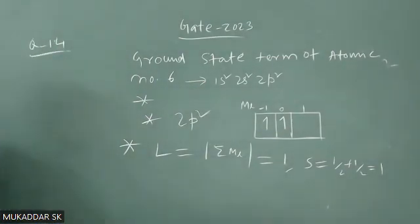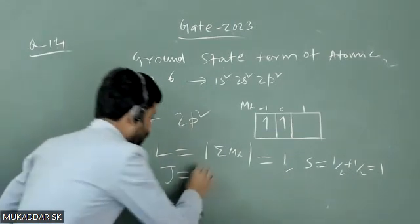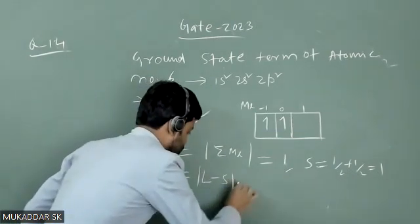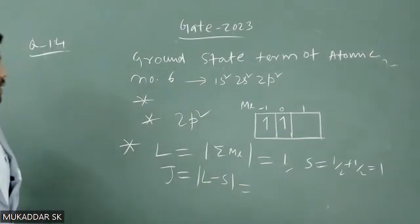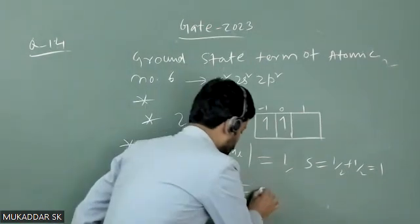To find out that ground state - less than half filled - J will be how much? It will be modulus of L minus S because less than half filled J for 2p², L minus S that will give 0.